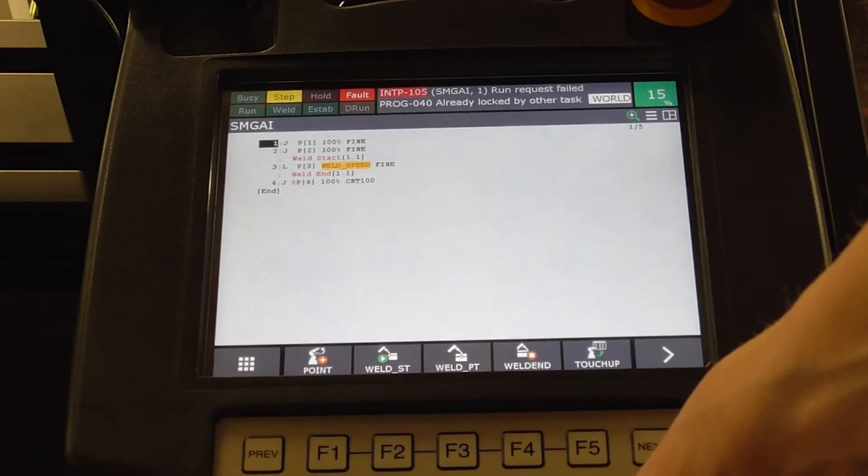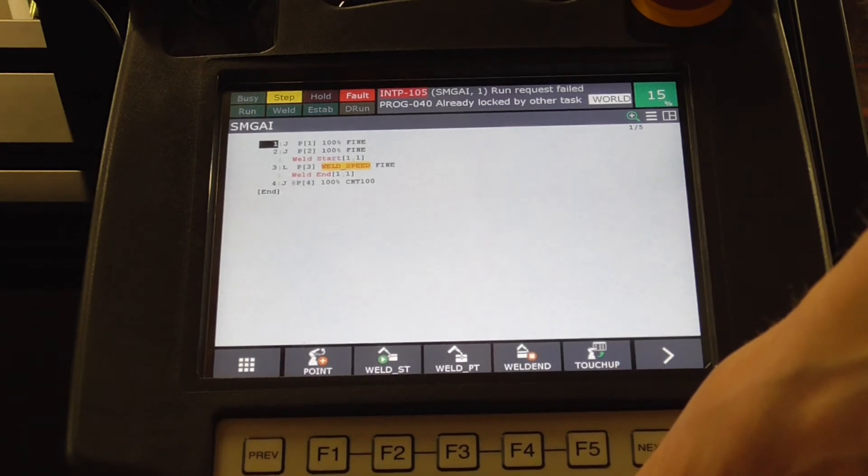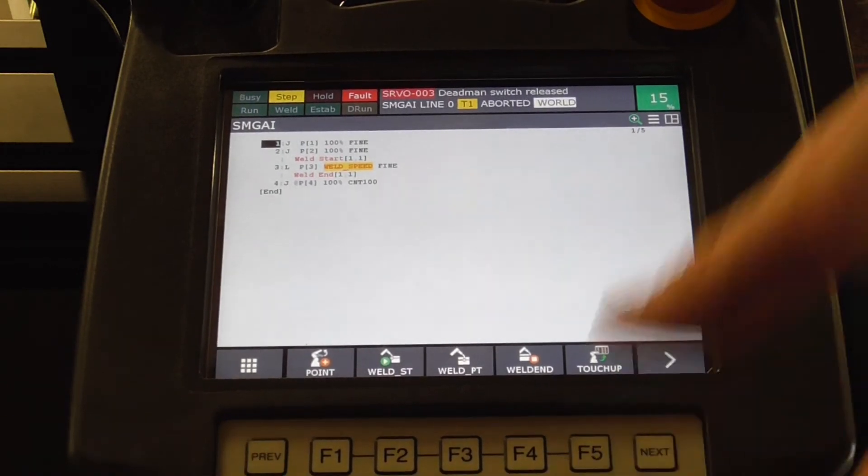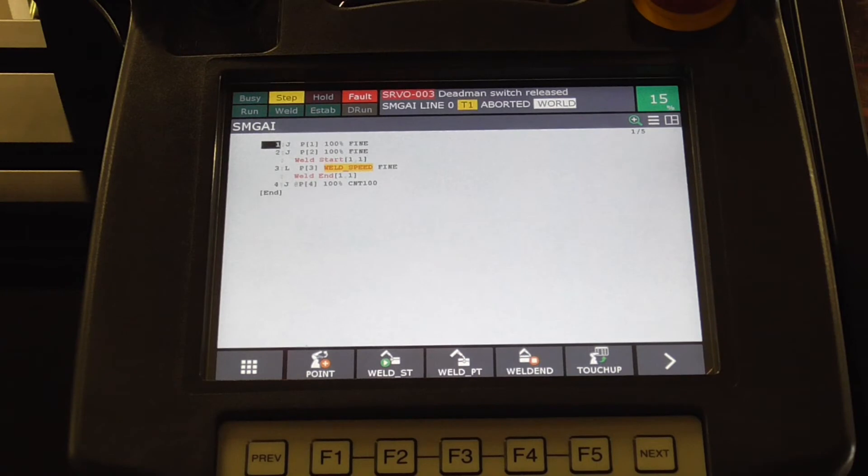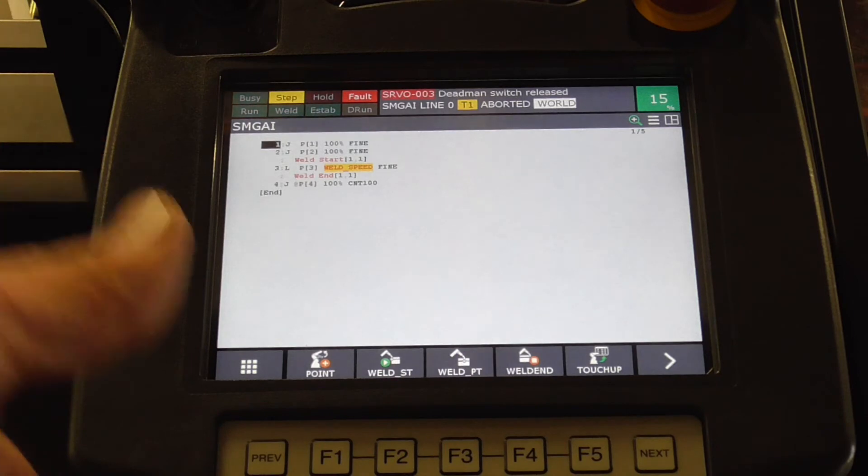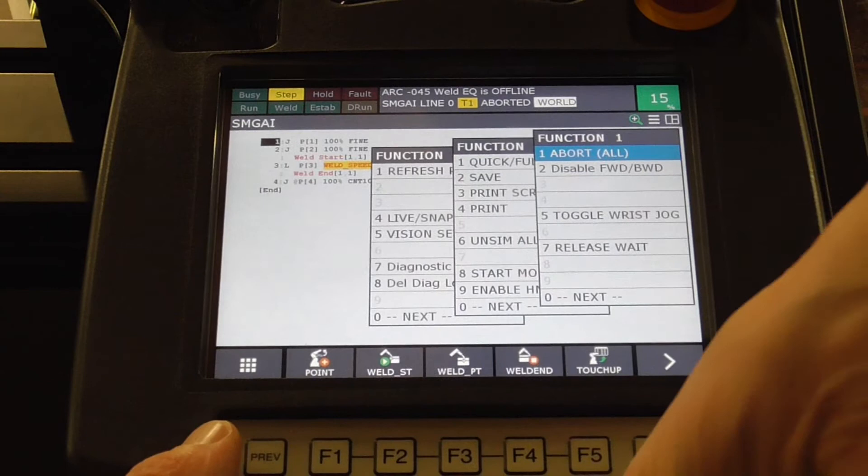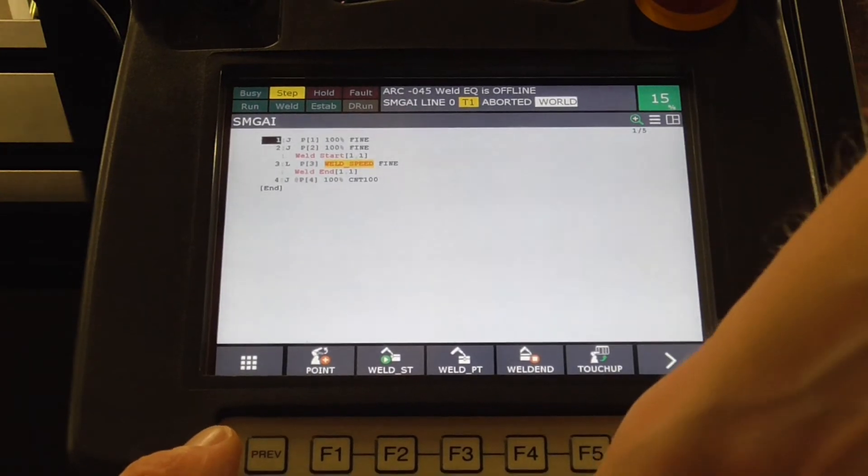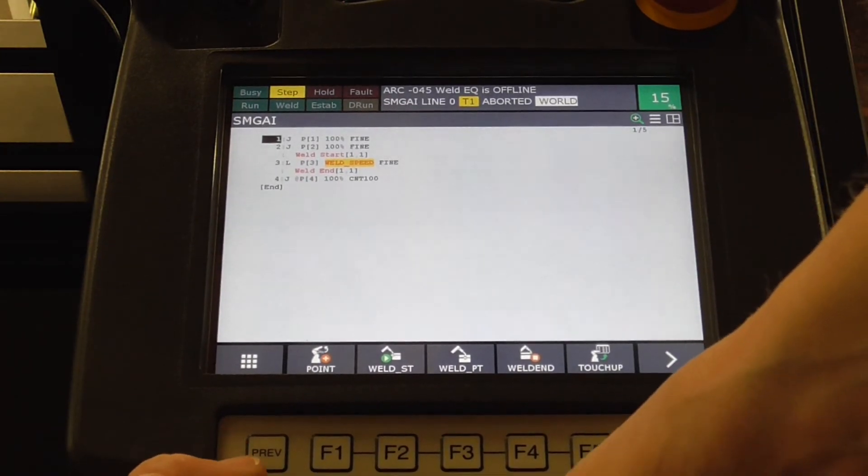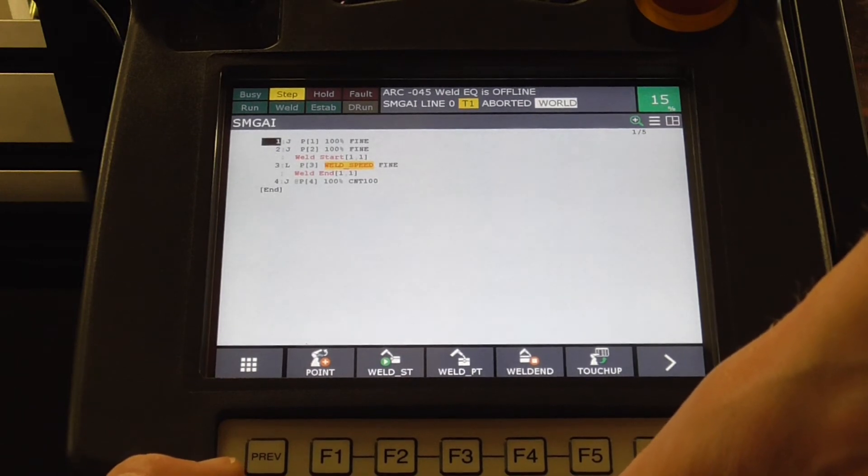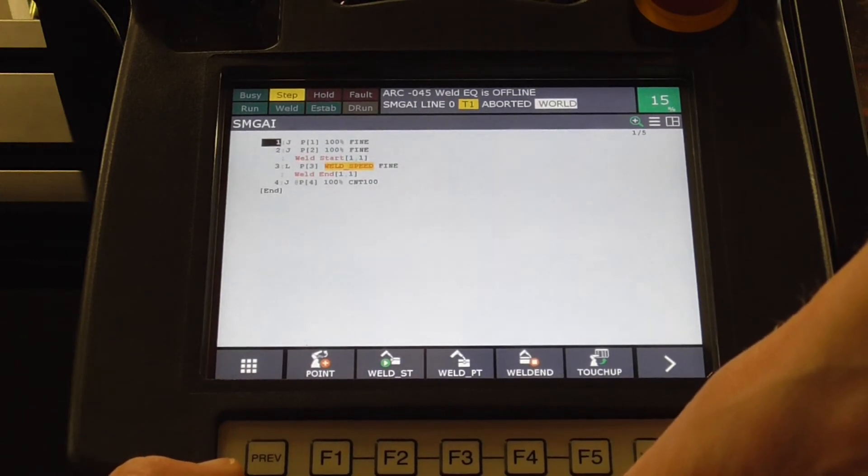I get this right here: run request failed, program 040 already locked by another task. Now, what the guy I was working with did was go over and turn the power off to get that to go away. The way that you actually can do that without having to turn the power off and then reselect the program is you go function, abort all, hit enter, and then you should be able to shift forward it. What I'll do now is I'll put it on the robot, I'll hit shift forward, and hopefully it'll go back to the first point.